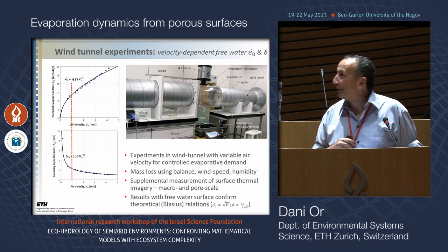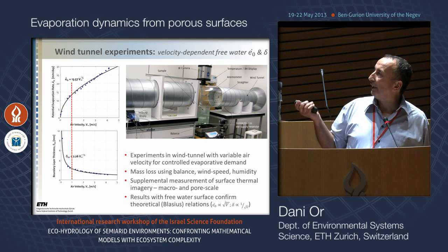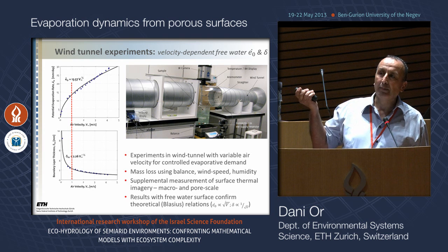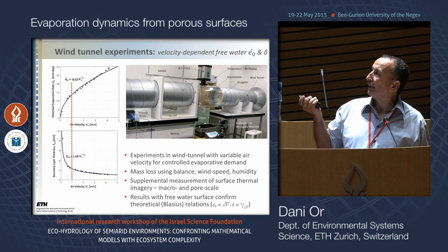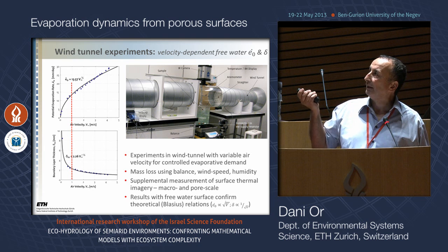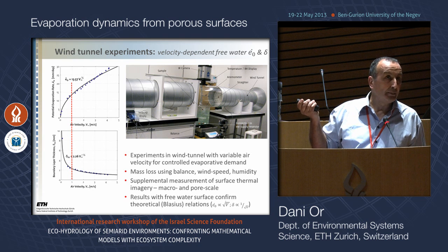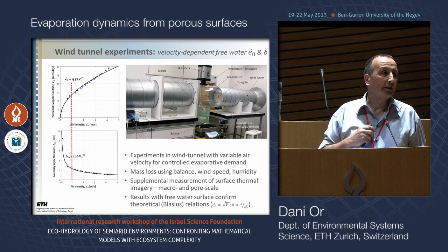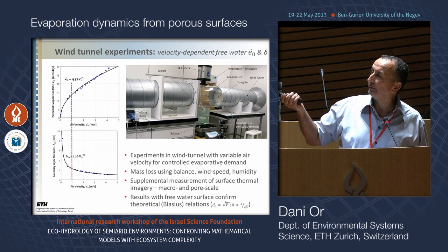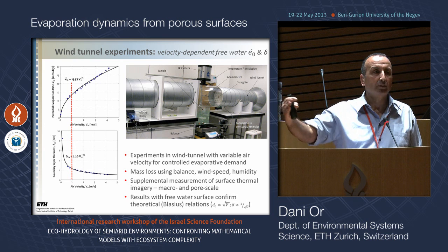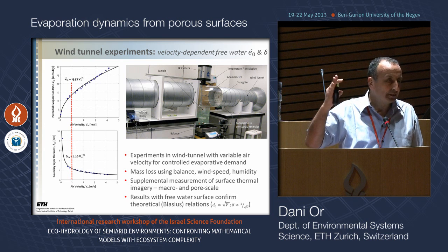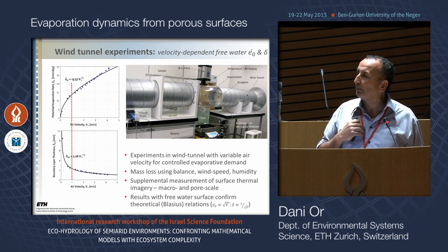We did experiments to establish a boundary layer using a column of sand in a homemade wind tunnel, changing air velocity to get different evaporation rates. We measured this over a free water surface and assumed that the boundary layer thickness for a porous surface is the same — not a bad assumption, though probably not completely correct.